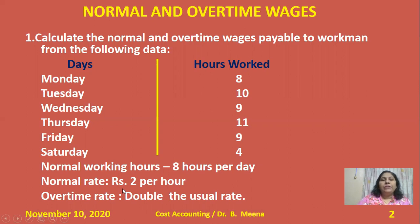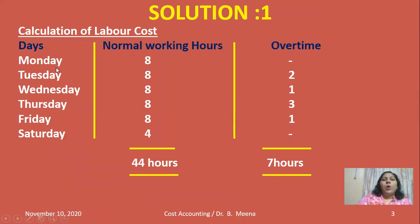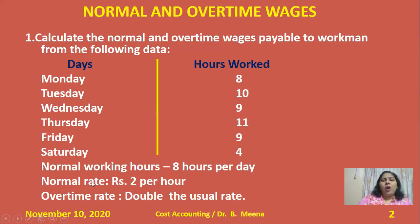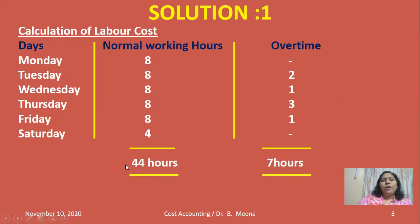Let me check the solution. I have three columns to calculate the labor costs. In the first column from Monday to Saturday, I've written the normal working hours for each day — 8 hours Monday to Friday and 4 hours Saturday. All together, we get 44 normal working hours in a week. To calculate normal time wages: 44 hours into 2 rupees equals 88 rupees.